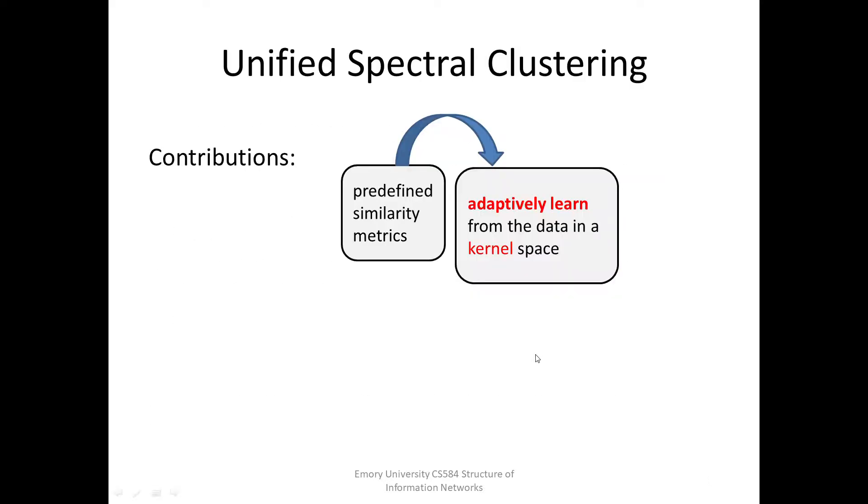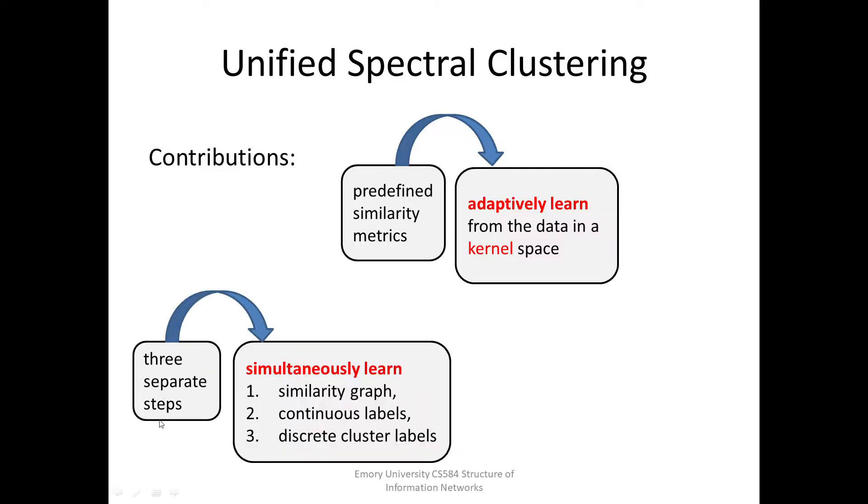Rather than using predefined similarity matrix, the similarity graph is adaptively learned from the data in kernel space. By combining similarity learning with subsequent clustering into a unified framework, we can ensure the optimality of the learned similarity graph. Unlike existing spectral clustering methods that work in three separate steps, they simultaneously learn similarity graph, continuous labels, and discrete cluster labels. By leveraging the inherent interactions between these three sub-tasks, they can be boosted by each other.